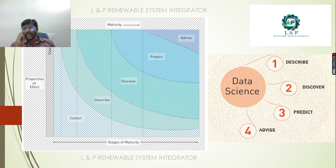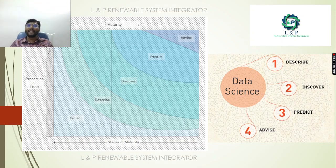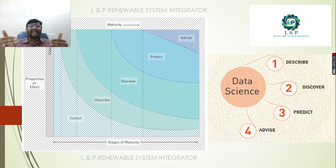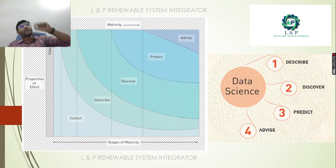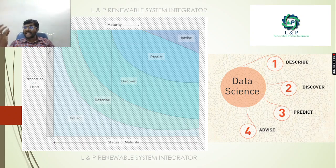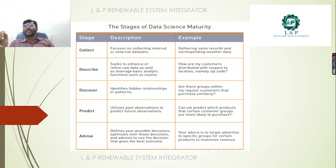When we categorize the proportion of effort by stages of maturity: first we collect, then as maturity increases we describe, then discover, then predict more things, and finally we can get good advice. In data science, describing, discovering, predicting, and advising are all very important.